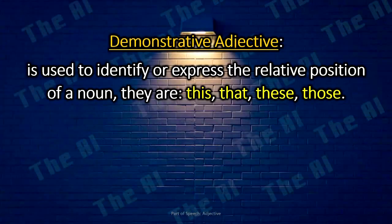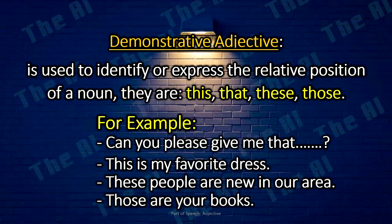Demonstrative adjectives are used to identify or express the relative position of a noun. They are: this, that, these, those. The demonstrative adjective in a sentence comes just before the noun or pronoun it is specifically modifying. Examples: Can you please give me that red color pen? This is my favorite dress. These people are new in our area. Those are your books.